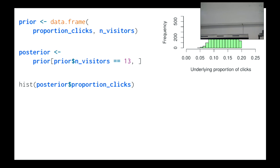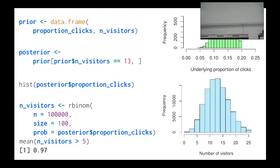As a last step, we take this posterior over the proportion of clicks and plug it back into the binomial distribution. This generates a new posterior predictive probability distribution over what will happen the next time we run 100 ads. We can calculate the probability of getting more than five clicks — and since we observed 13 clicks, the probability increases to 97%.